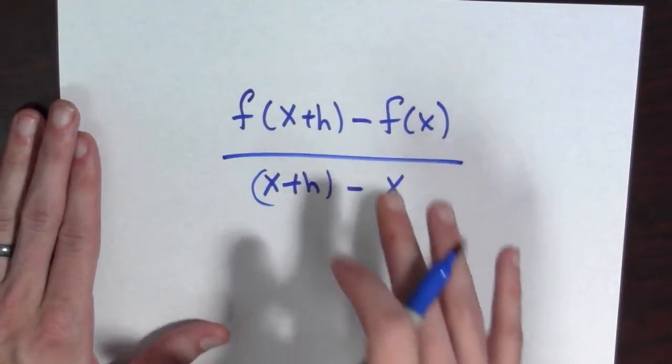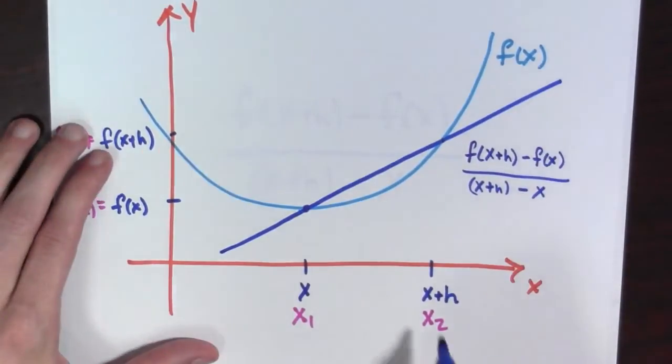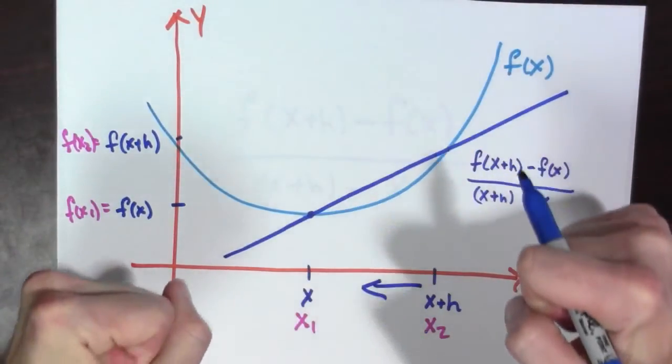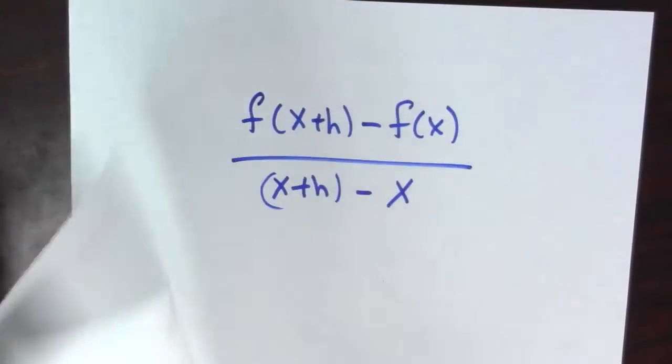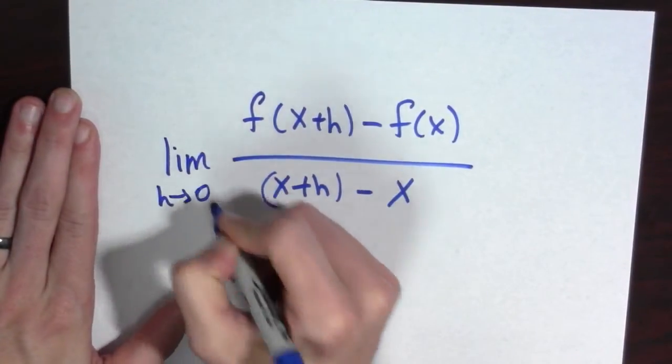we're trying to find the instantaneous growth rate. And so if we look back at our curve here, what we want to do is we want to take this point and move it back, thus moving this into a tangent line. And so what we're going to do is we're going to take the limit as h goes to 0 of this whole thing.